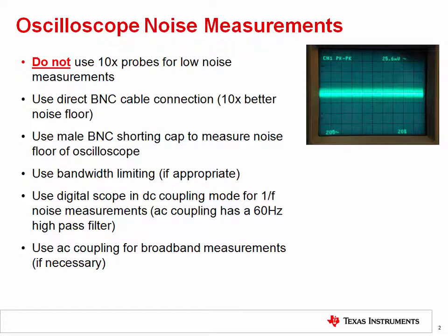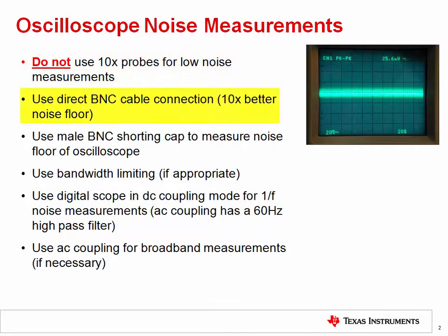The first tip relates to the type of probe connected to the scope. Most scope probes are 10x probes, meaning there is a divide-by-10 attenuator inside the probe. This attenuation will reduce the noise floor by a factor of 10, so don't use this type of probe for noise measurements. Instead, use a direct connection to the scope without any attenuation for a 10 times better noise floor.